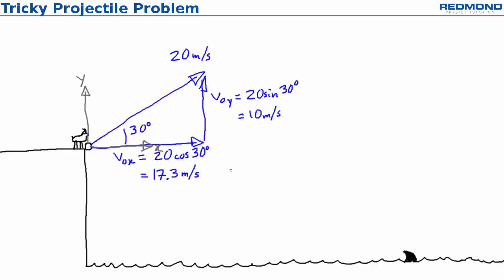Ax is zero so the horizontal velocity is constant and v final x is also 17.3 meters per second. V final y is unknown. Billy needs that to answer the first question.